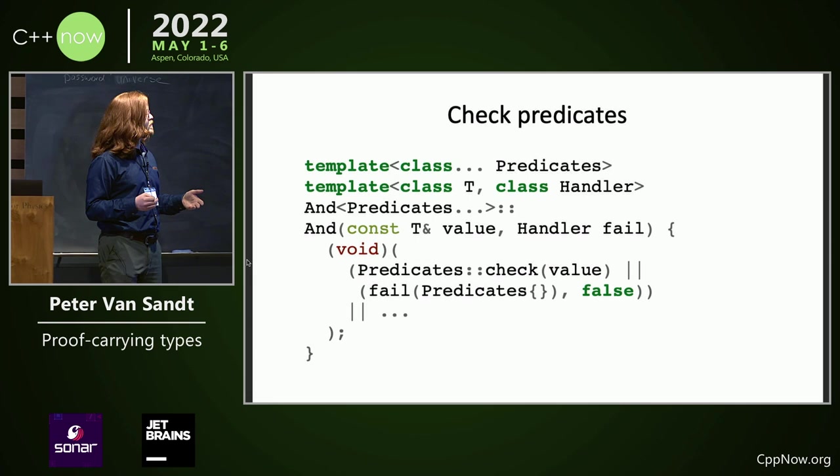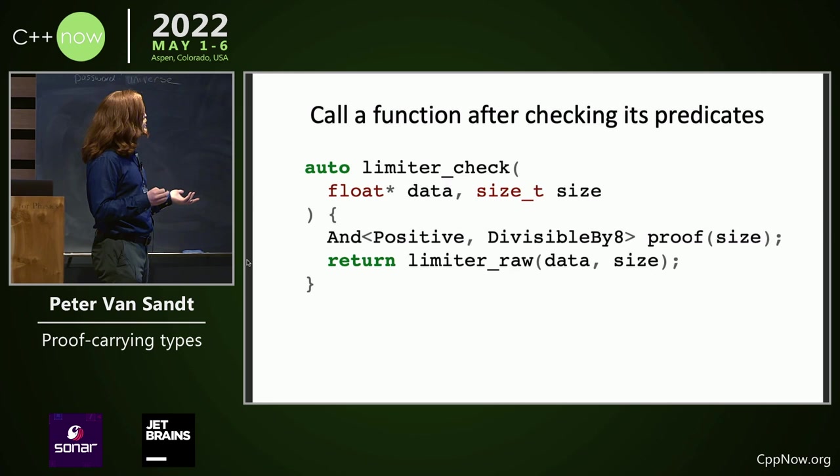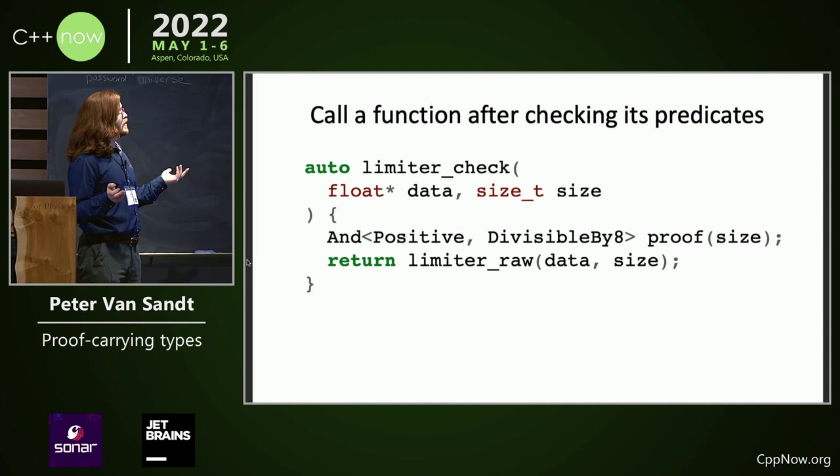We can use this in construction of our proof. We can establish a proof on our size that it's divisible by 8. In the case that this fails, we abort. So we know that we can call limiter_raw with our size because it's reachable only if the precondition is satisfied.